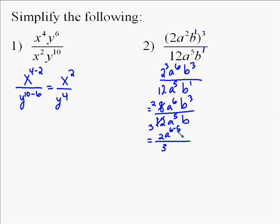We do the subtraction, which is going to be a to the 6th minus 5 because the 6th is bigger than the 5, and then 3 minus 1 because the 3 is bigger than the 1. So the final answer becomes 2, a to the 1st, b to the 2nd, all over 3.